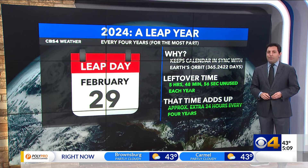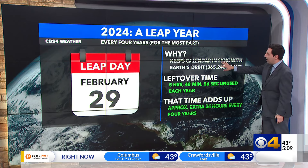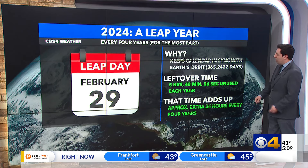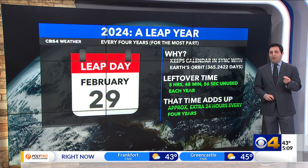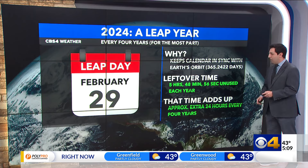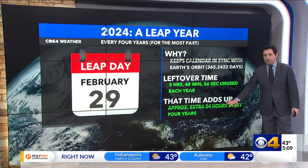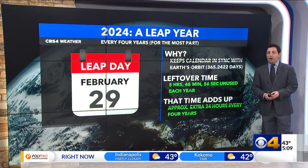365 days — the days we're all very familiar with — technically that's a rounded number. The actual amount of time for Earth's orbit is 365.2422 days, and every year that leaves us 5 hours, 48 minutes, and 56 seconds of unused time. So over four years that adds up to approximately 24 hours of unused time.